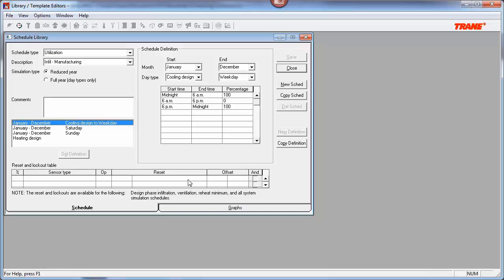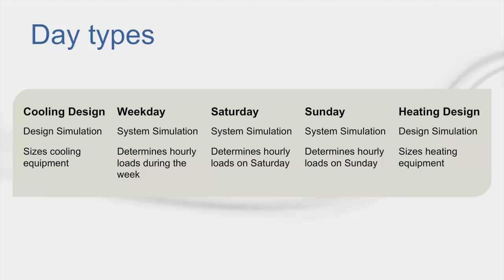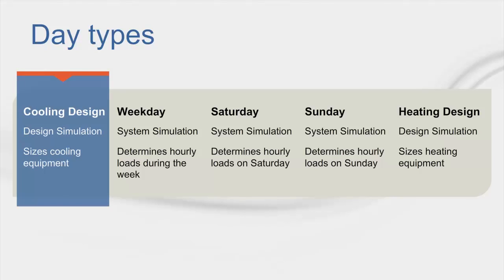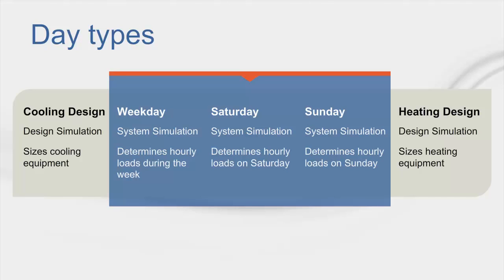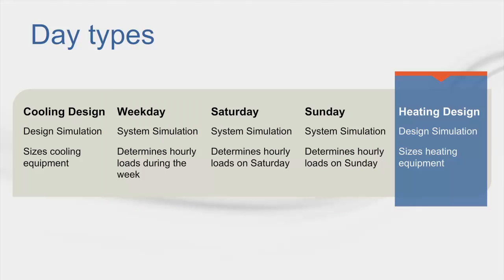Now that we have a grasp on the inputs required to create a schedule, let's talk about day types in more detail. Each day type represents a day which helps determine either equipment size or determines hourly loads to calculate energy consumption for your building. To determine peak loads for sizing cooling coils, design schedules are used in conjunction with cooling design weather. To determine hourly loads for energy analysis, weekday through Sunday day types are used. To determine peak loads for sizing heating coils, heating design schedules are used in conjunction with the winter heating design dry bulb temperature.